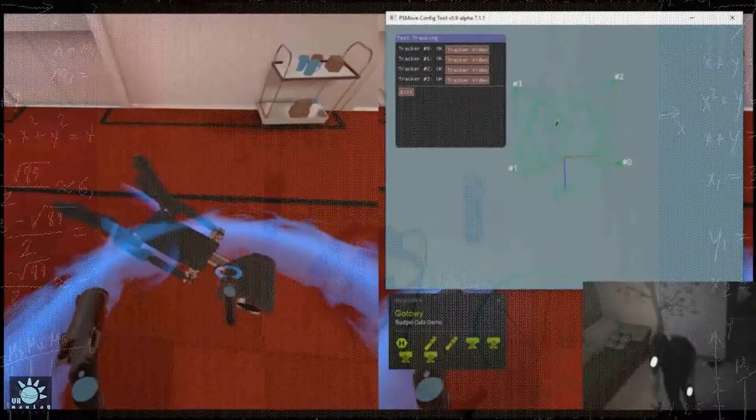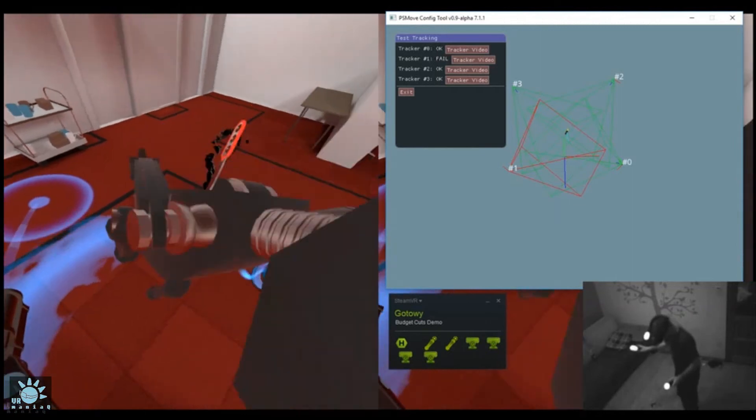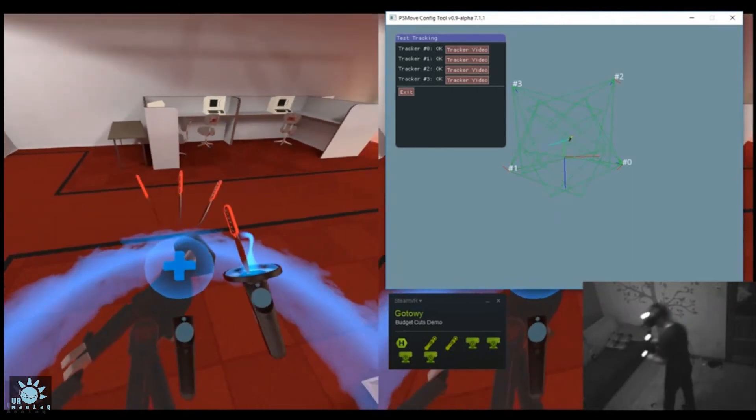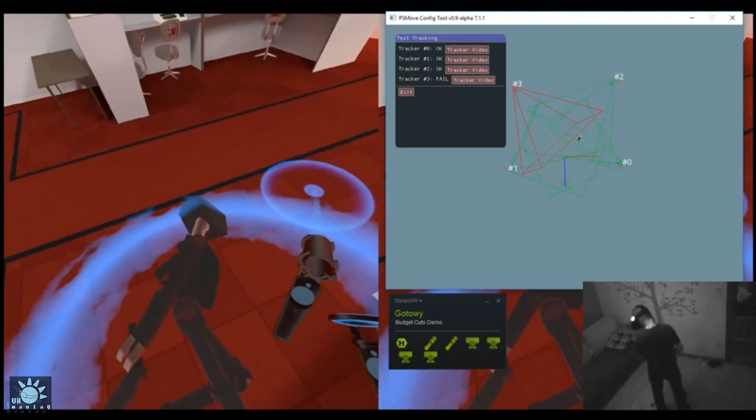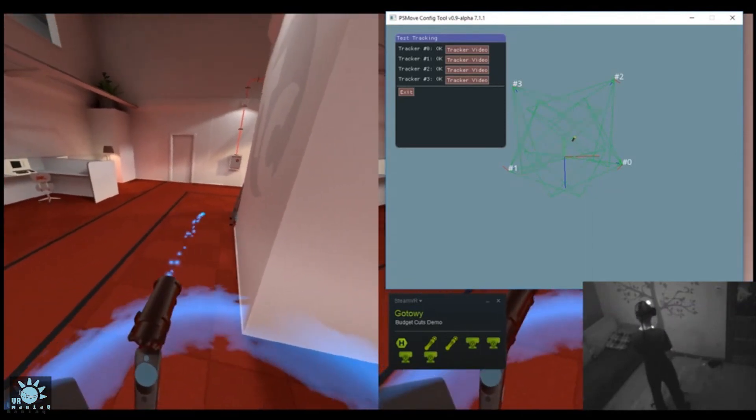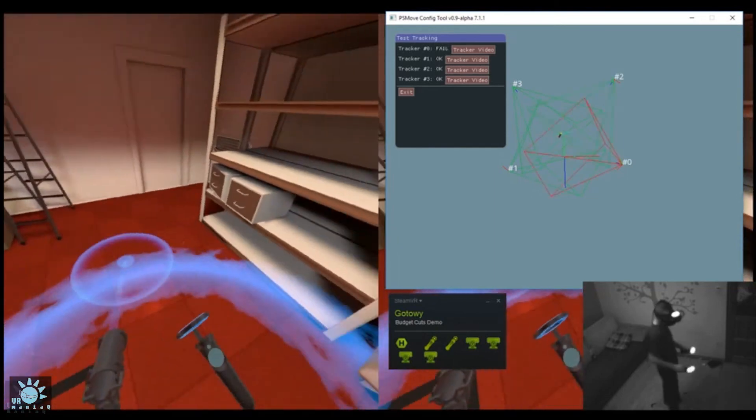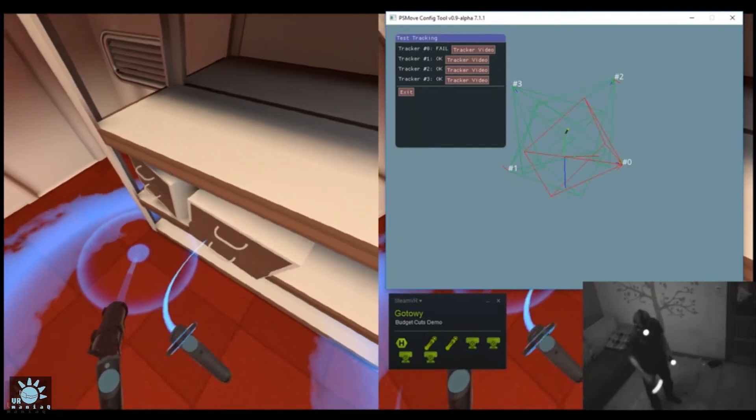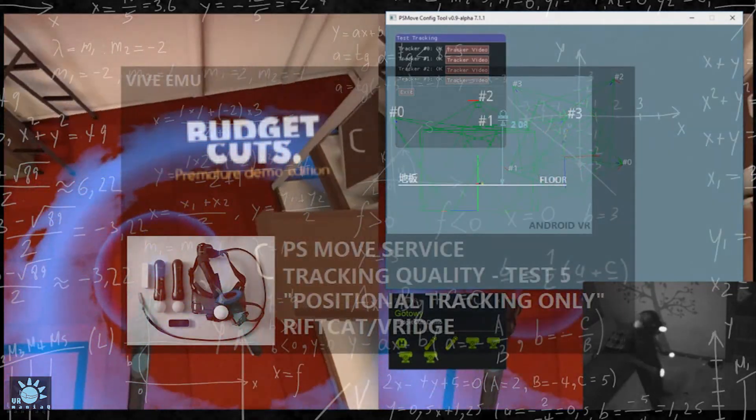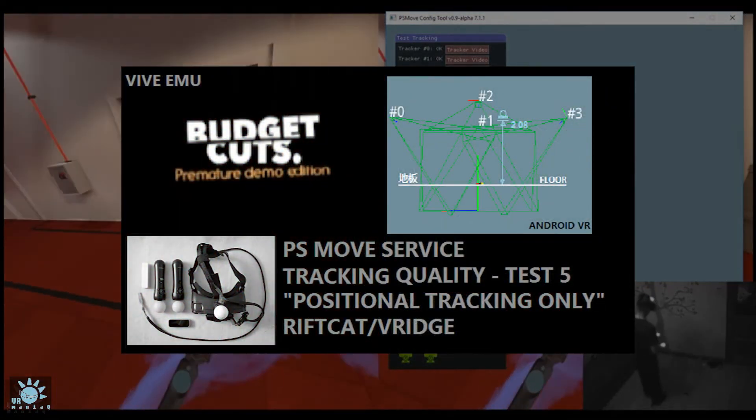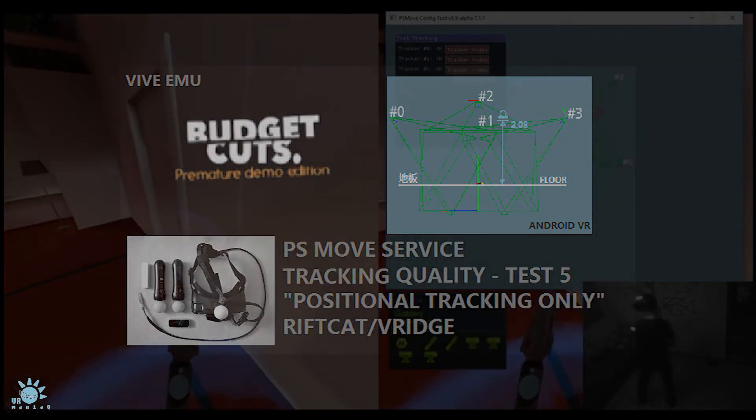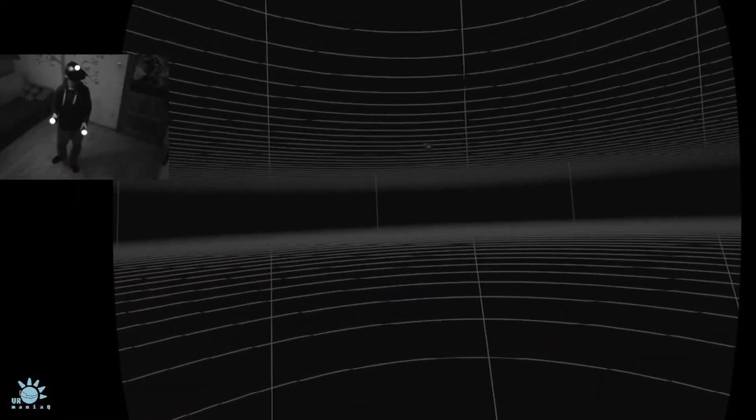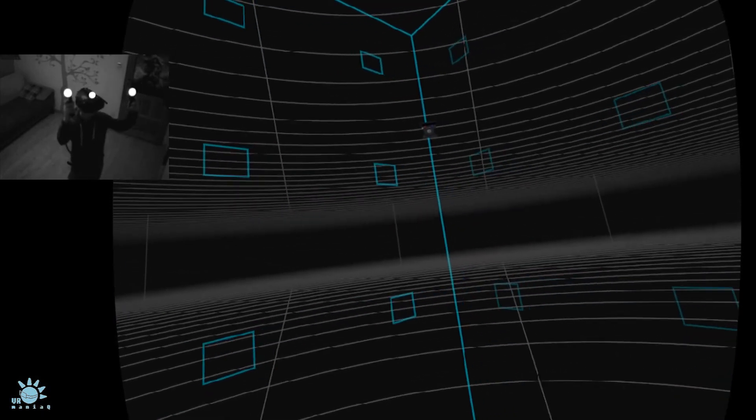Even with a very low ceiling, if the two cameras at the same time see the ball, the tracking will be smooth and alright. You can see that on this video.